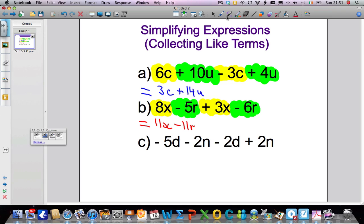And finally, let's have a look at the last problem here. Again, I'm going to take the highlighter just to highlight what's like terms. The -5d and we've got -2d, they're like. And we'll switch to the green. We've got the -2n and the +2n, well they're like. So I'm going to combine them.